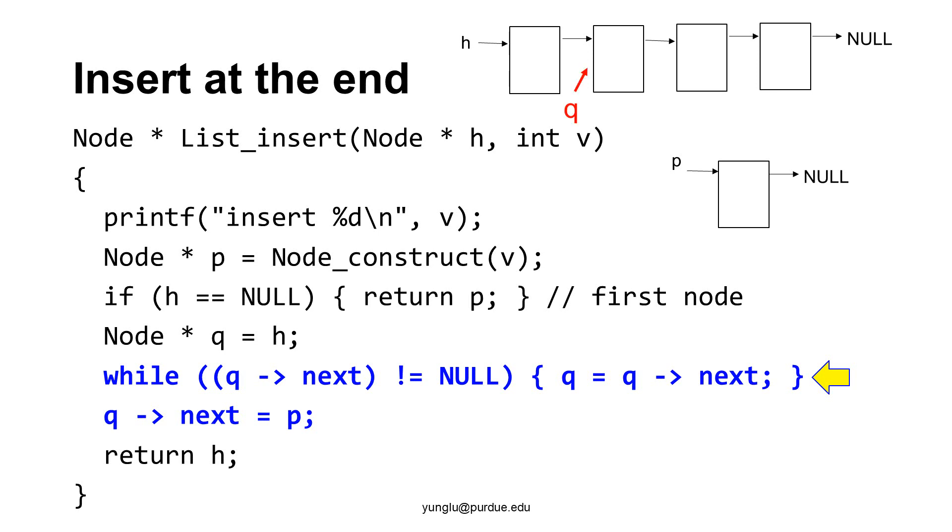How does this work? Queue is initialized to point to the first node. The program checks whether queue's next is null. If it is not null, queue moves to the next. Queue moves to the next again. When queue's next is null, queue is the last node. This line puts P as queue's next. This line changes the link as shown in the slide. The function returns H because it is the first node of the linked list.